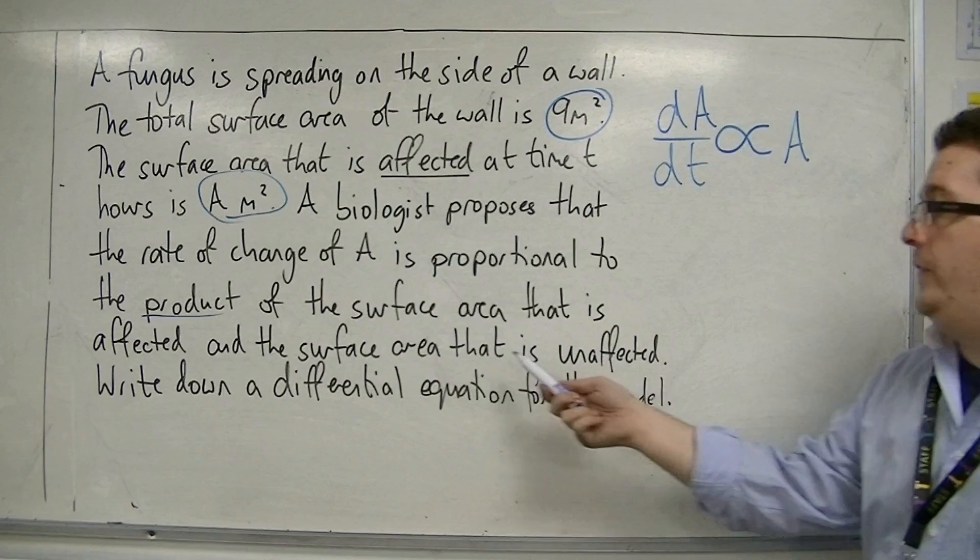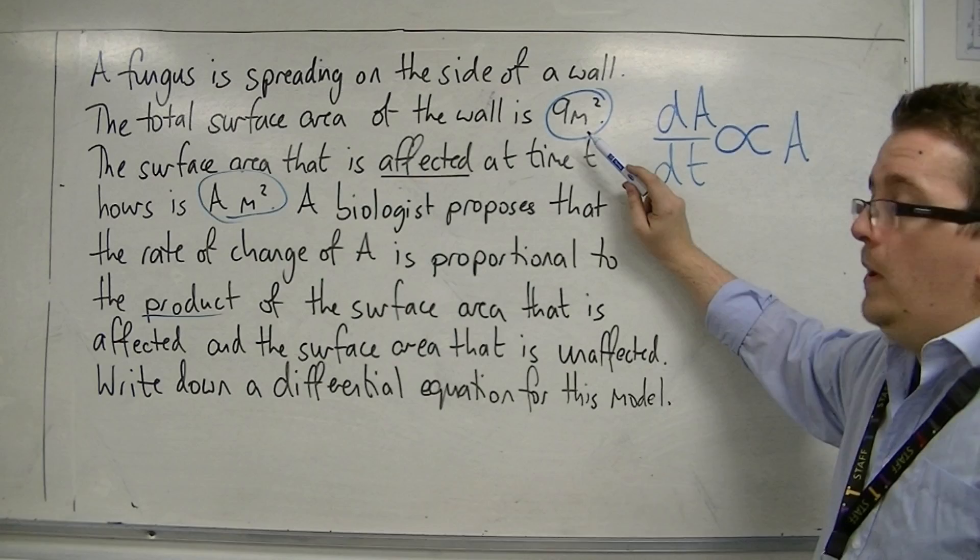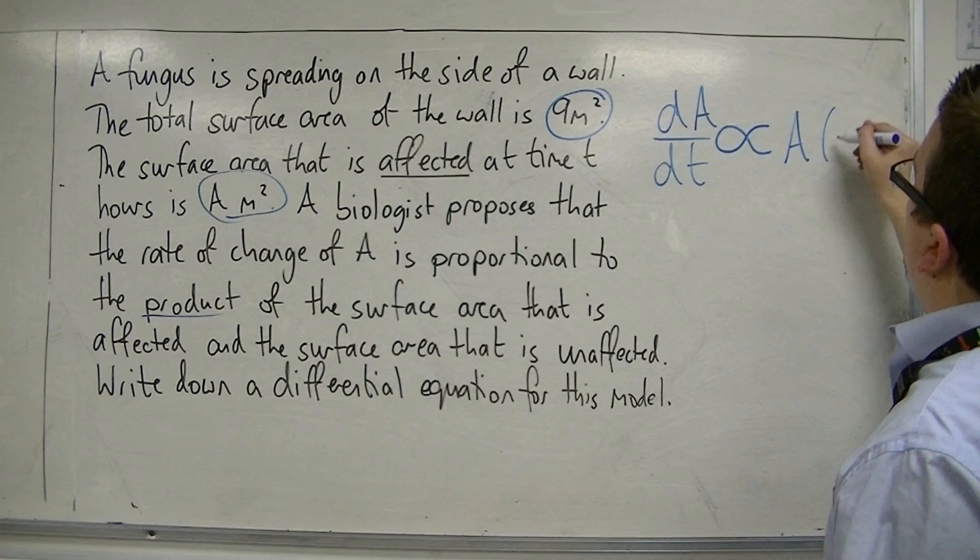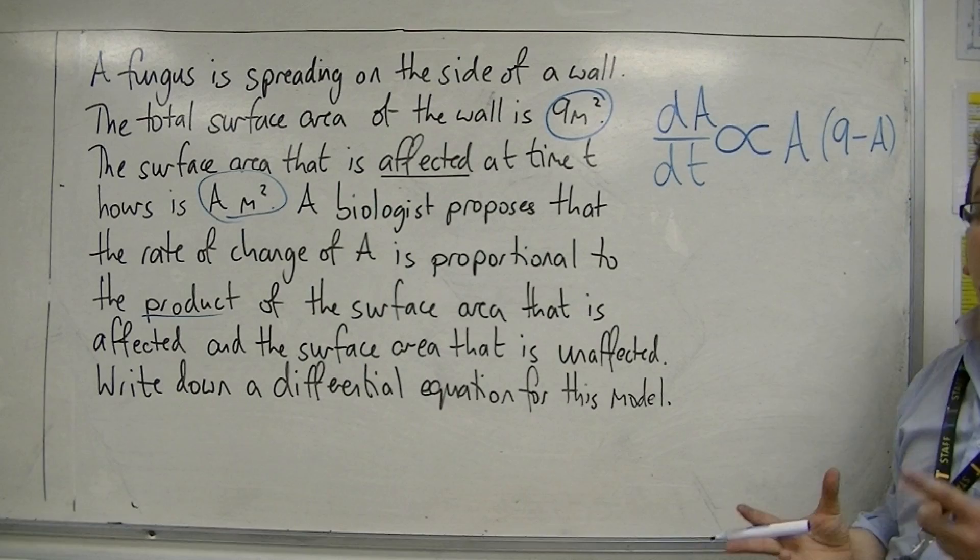Now we know that the area of the wall is 9 metres squared, so the part of the wall that is unaffected will be 9 minus A, because 9 is the whole bit of the wall and A is the bit that is affected. So it's the product of the bit that is affected with the part that is unaffected.